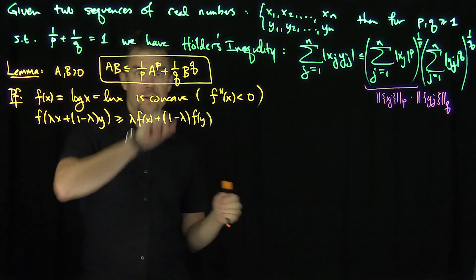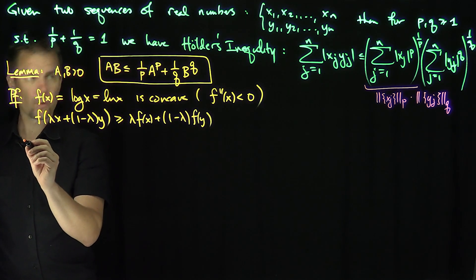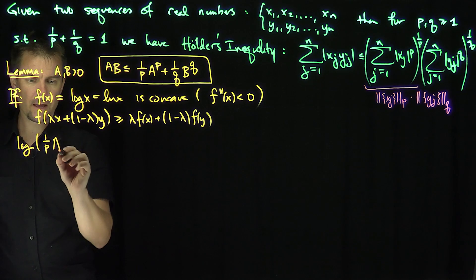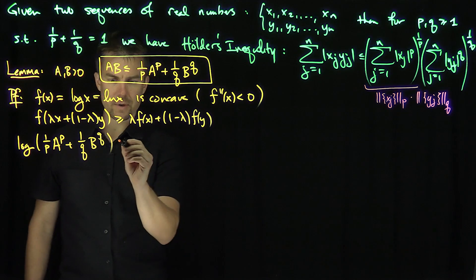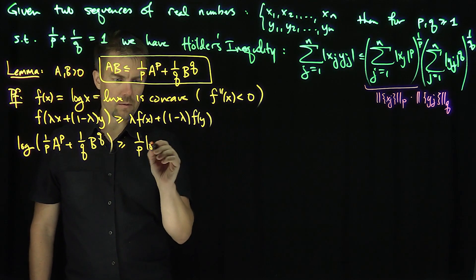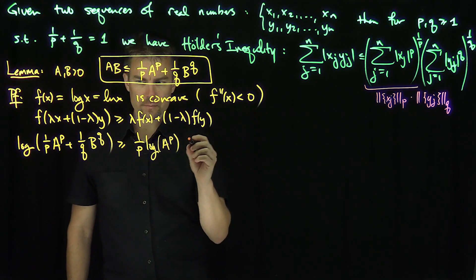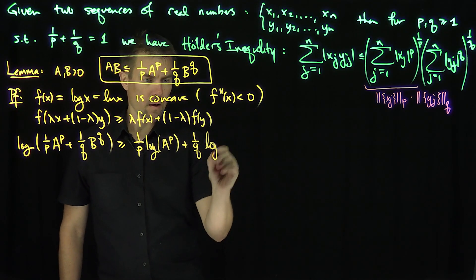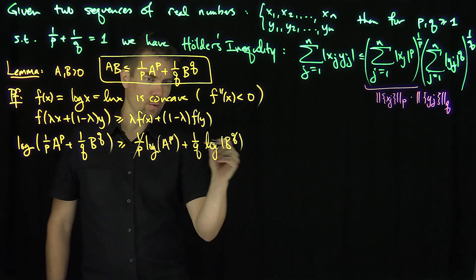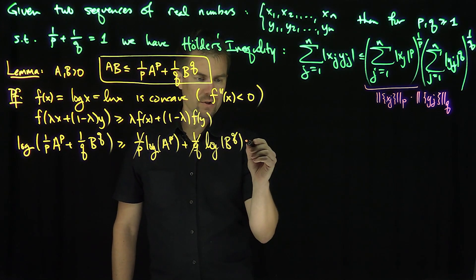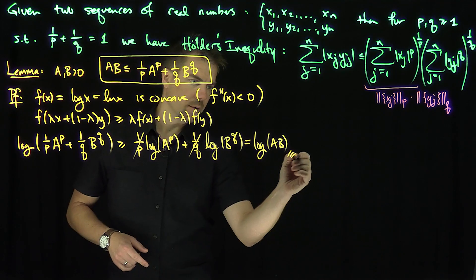Applying this result, we get: log(1/p · a^p + 1/q · b^q) ≥ (1/p)log(a^p) + (1/q)log(b^q). By properties of logarithms, the powers of p and q come out, so the right-hand side equals log(a) + log(b) = log(ab). Taking exponentials of both sides yields Young's inequality.